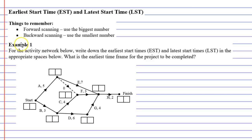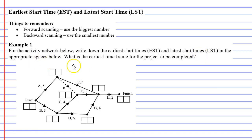In this video we're going to complete example 1. It says, for the activity network below, write down the earliest start times and latest start times in the appropriate spaces below. It then says, what is the earliest time frame for the project to be completed?